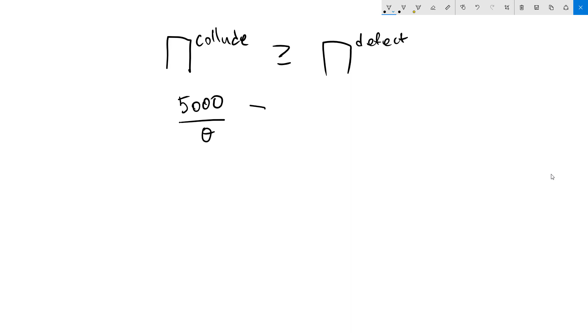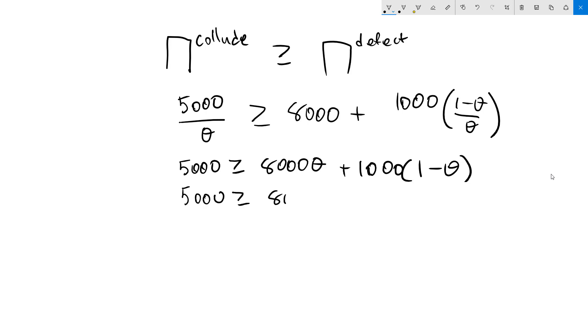Based on the calculations we just did, we've got 5,000 over theta greater than or equal to 8,000 plus 1,000 times 1 minus theta over theta. We'll do some algebra and multiply both sides by theta. We get 5,000 greater than or equal to 8,000 theta plus 1,000 times 1 minus theta. I'm going to distribute to get 8,000 minus 1,000 theta. Collect terms. We get 4,000 greater than or equal to 7,000 theta. Divide both sides by 7,000.